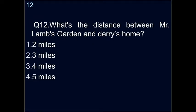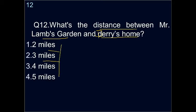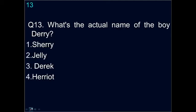Question twelve: what is the distance between Mr. Lamb's garden and Derry's home? You need to state the distance. Options are two miles, three miles, four miles, or five miles. The correct answer is three miles — the distance between them was three miles.